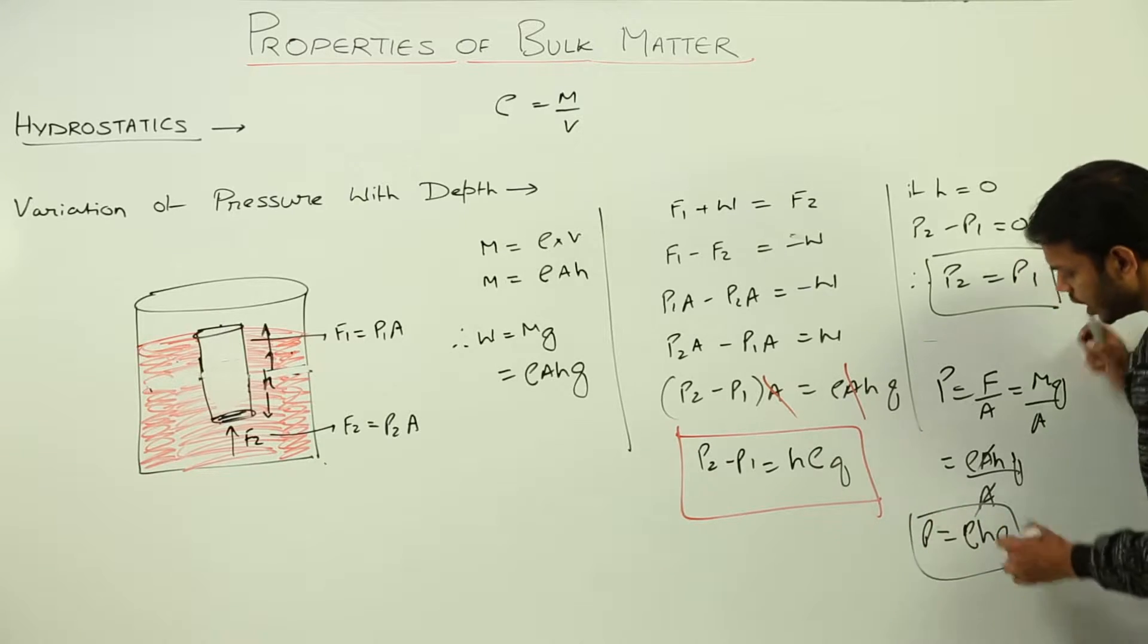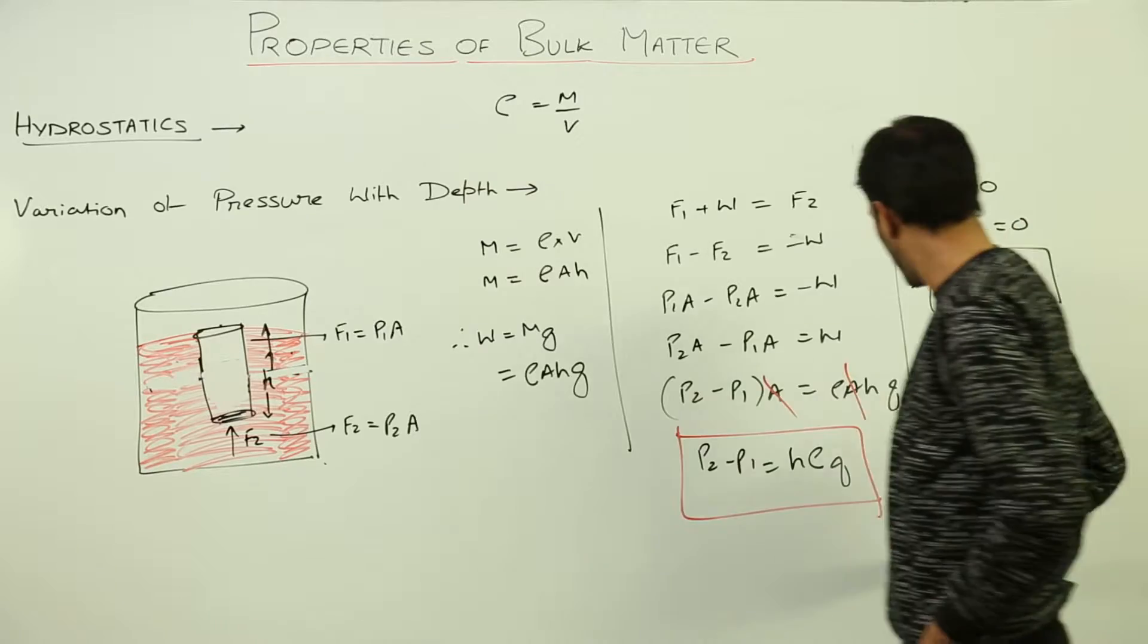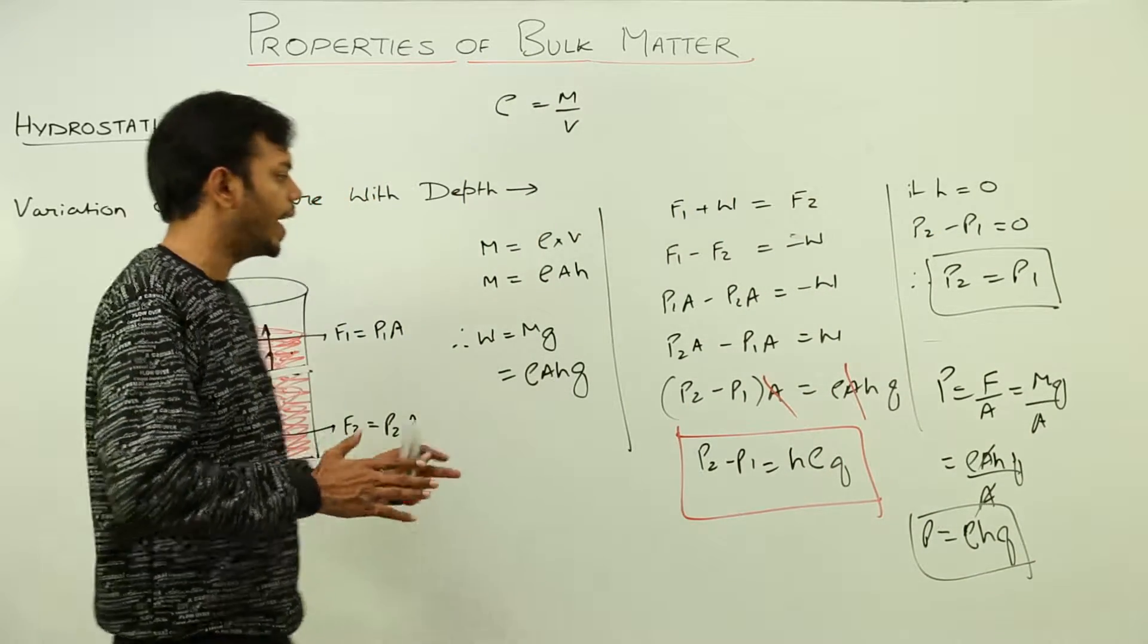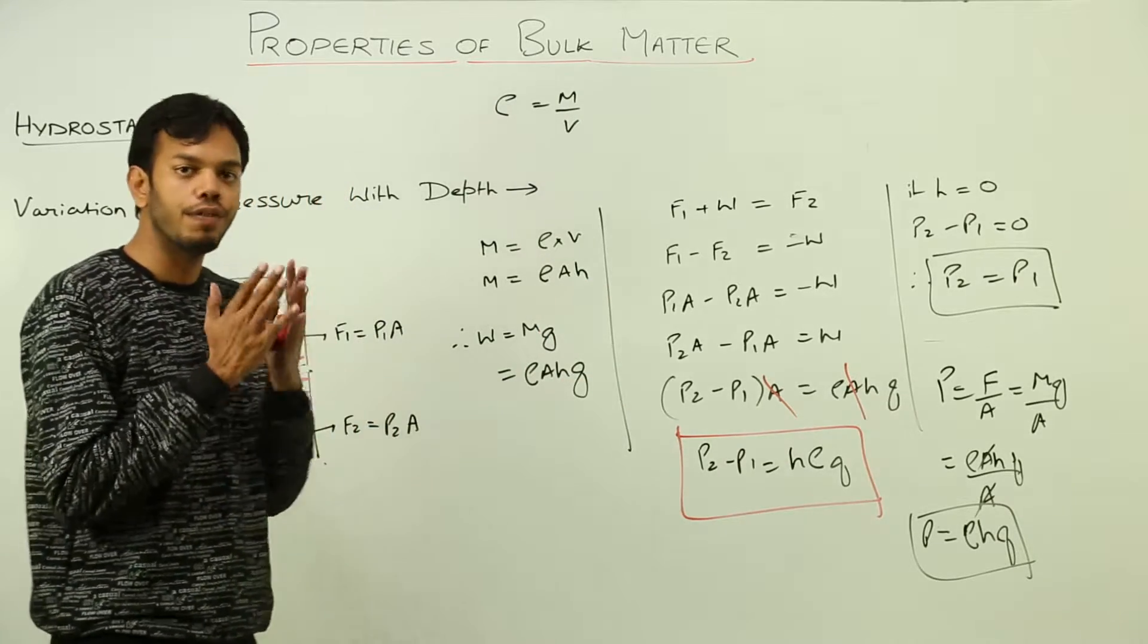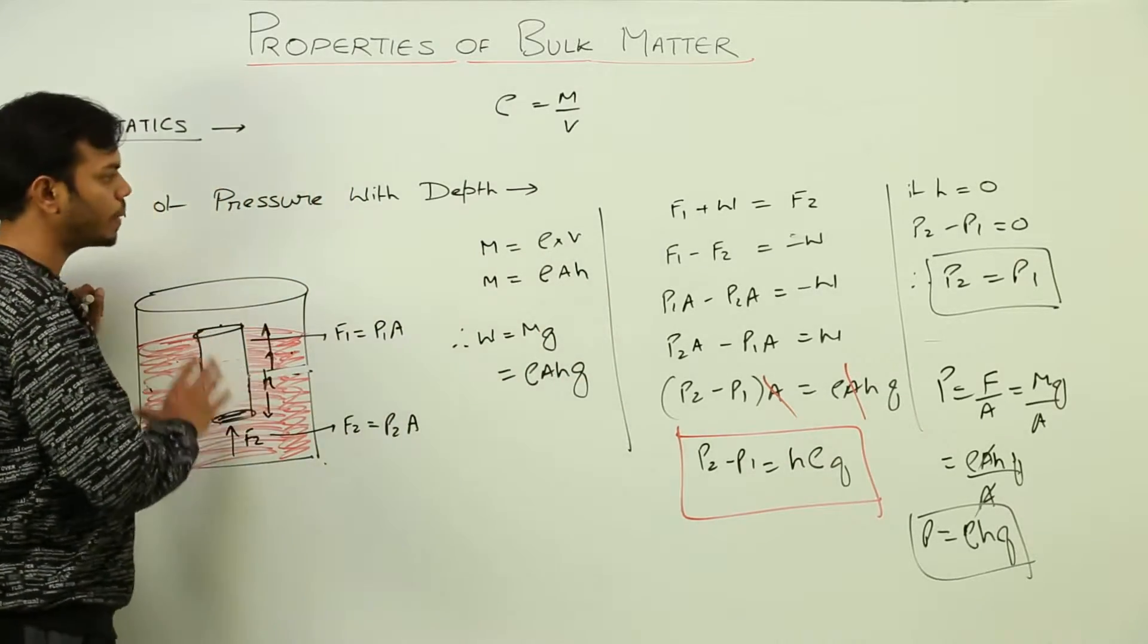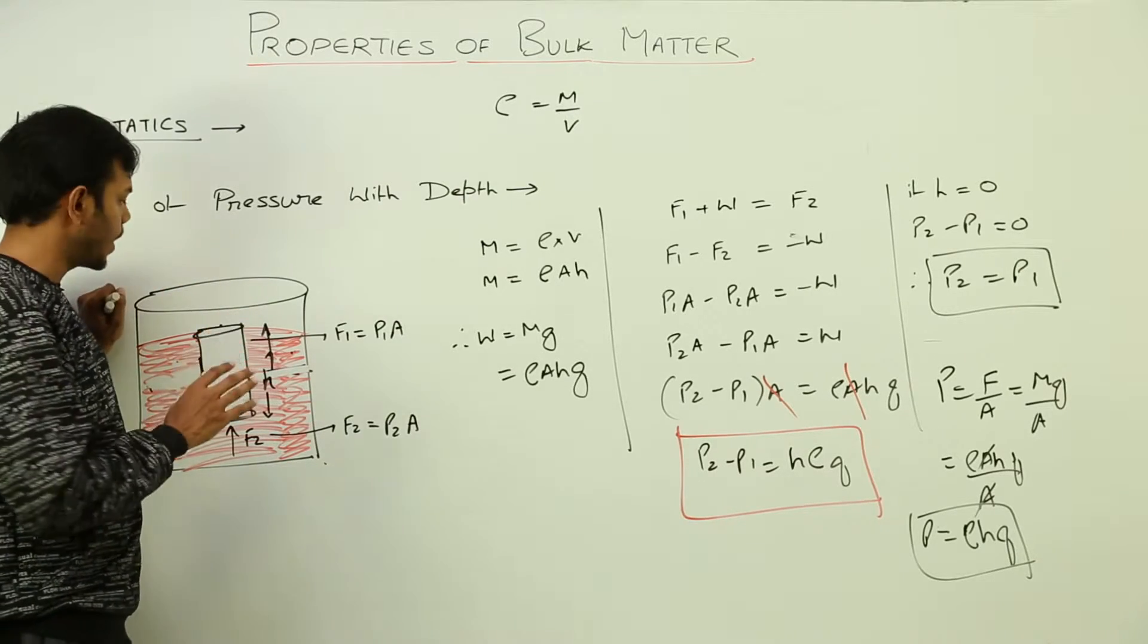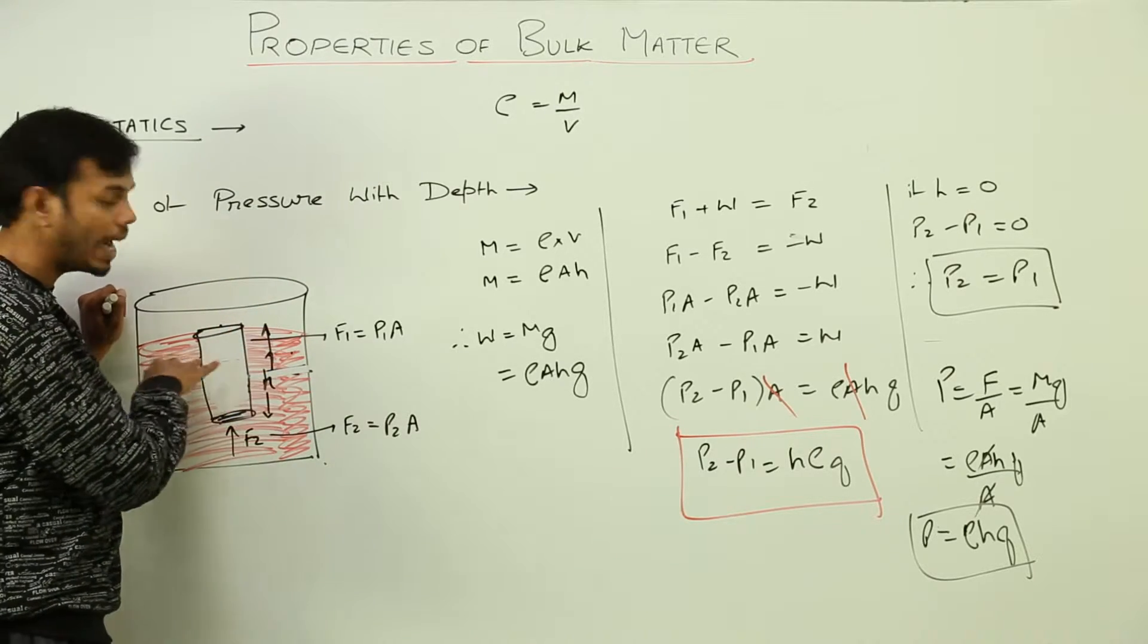From this point we conclude that pressure depends on the height if density and gravity is constant. Otherwise, pressure depends on density of fluid and height of the liquid column at which depth we are finding out the pressure. Pressure is irrespective of the other factors because at same height or same depth, pressure between any two points will be equal.